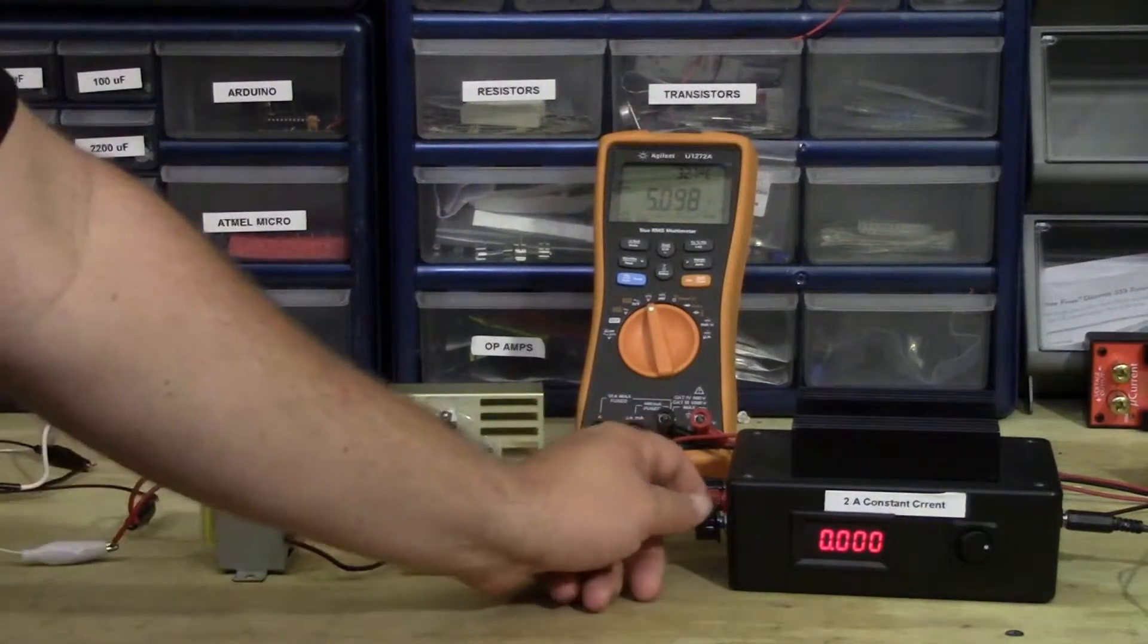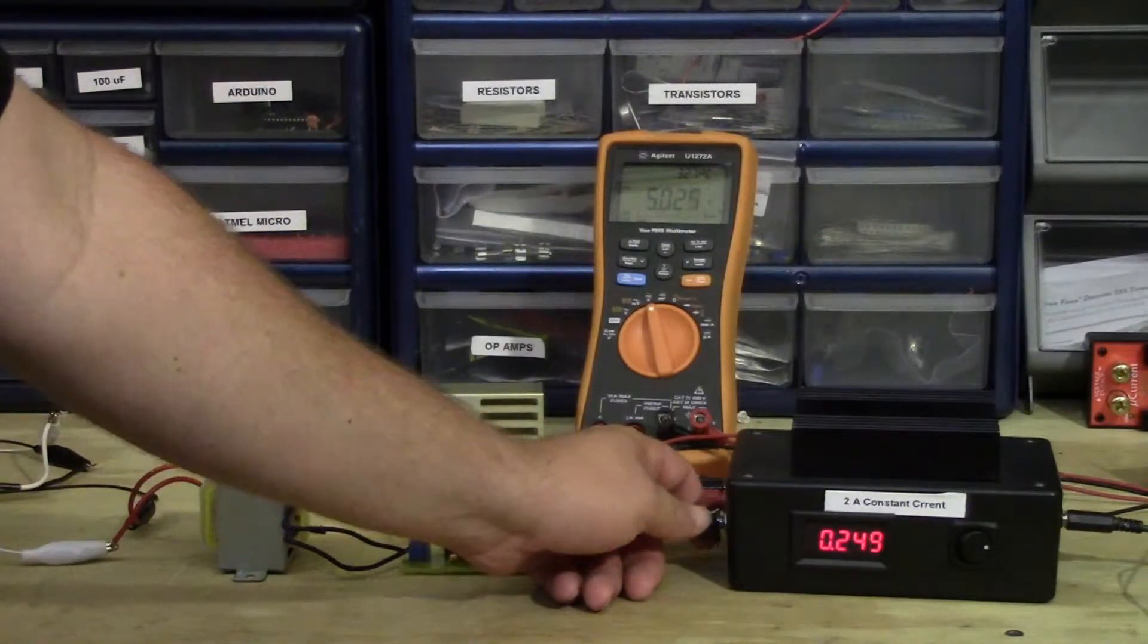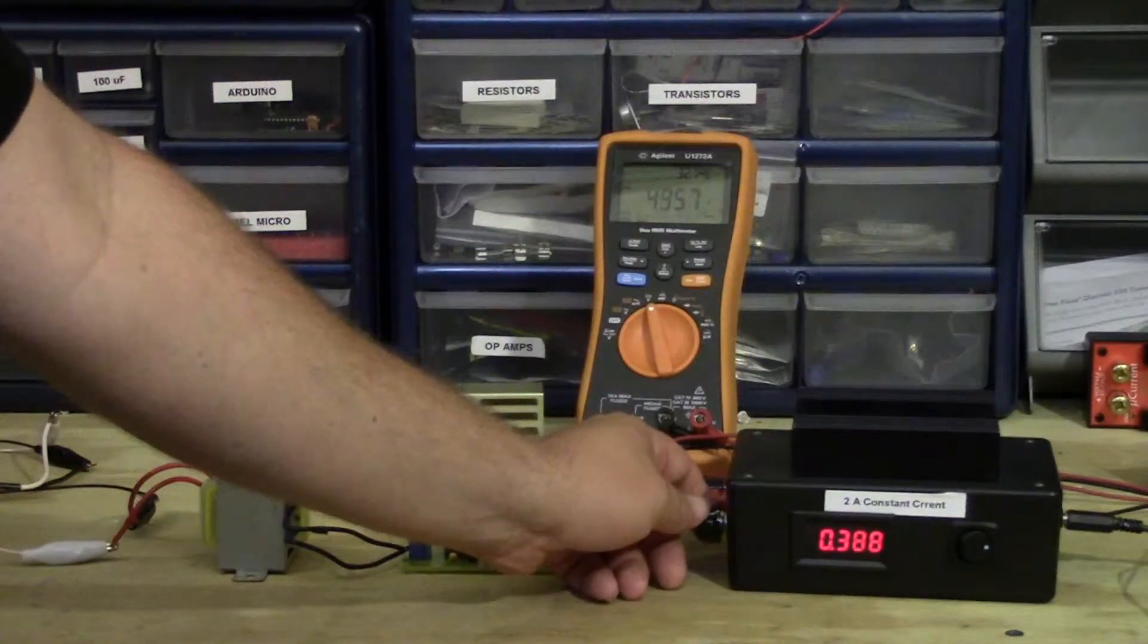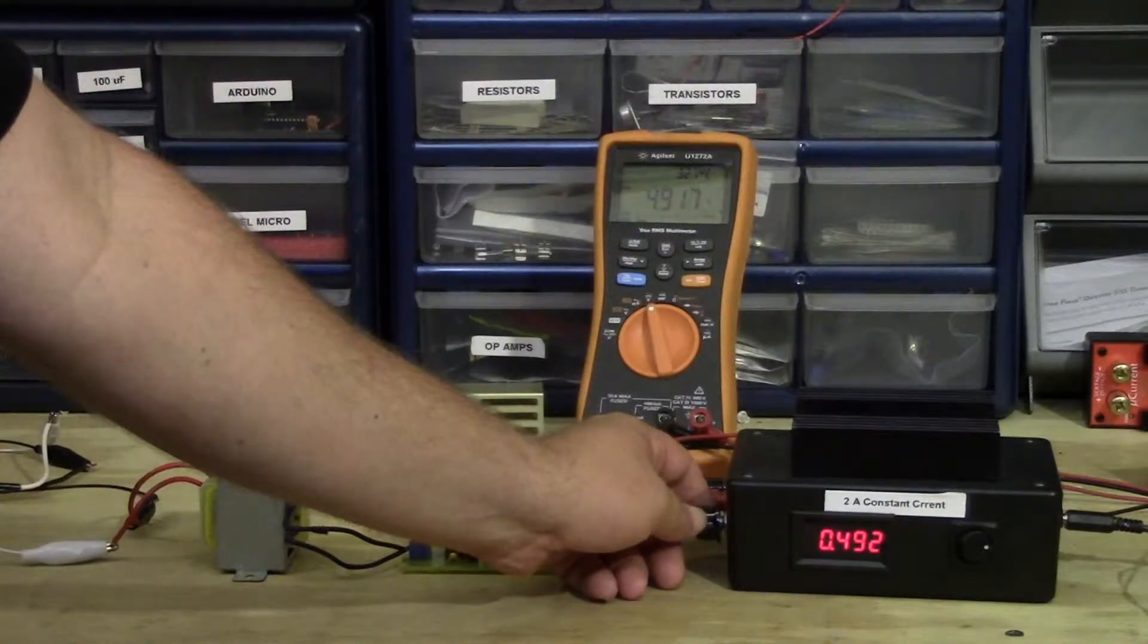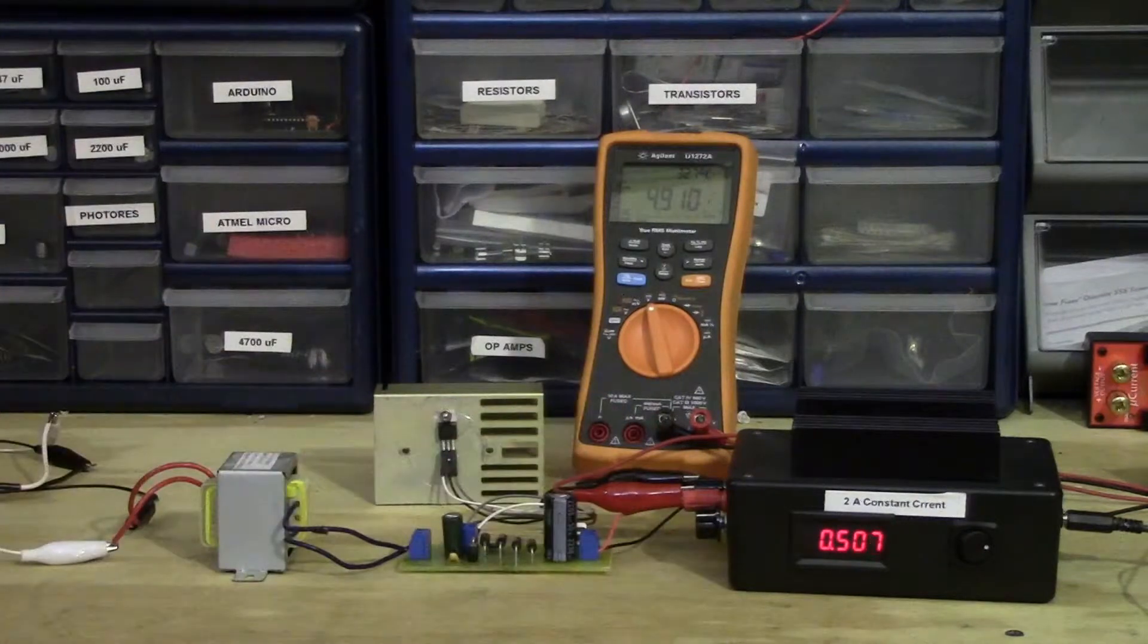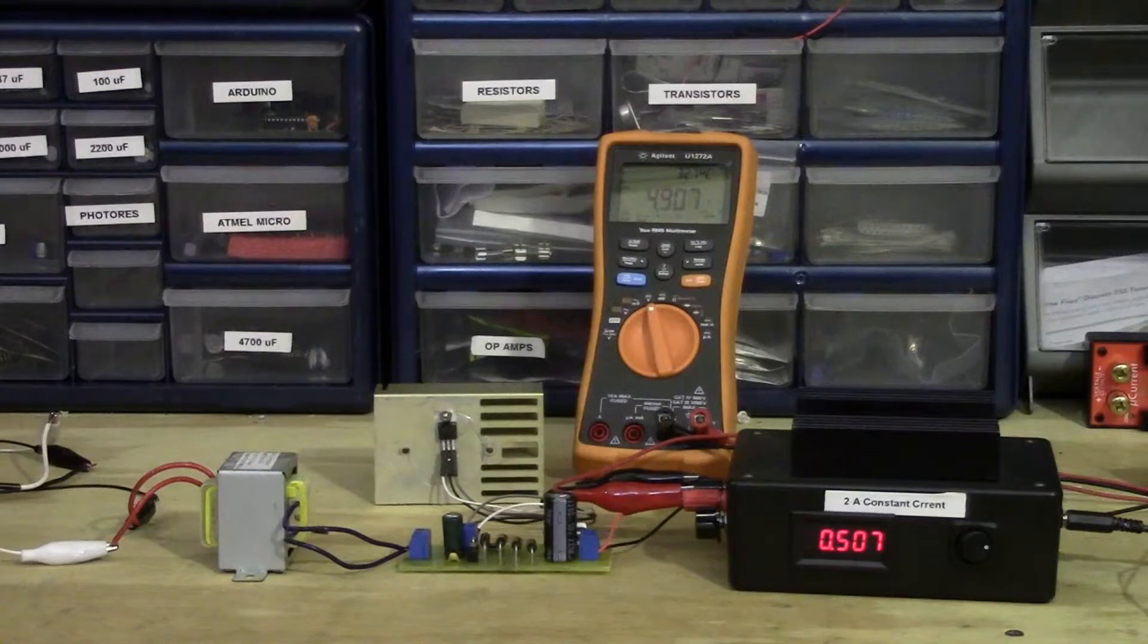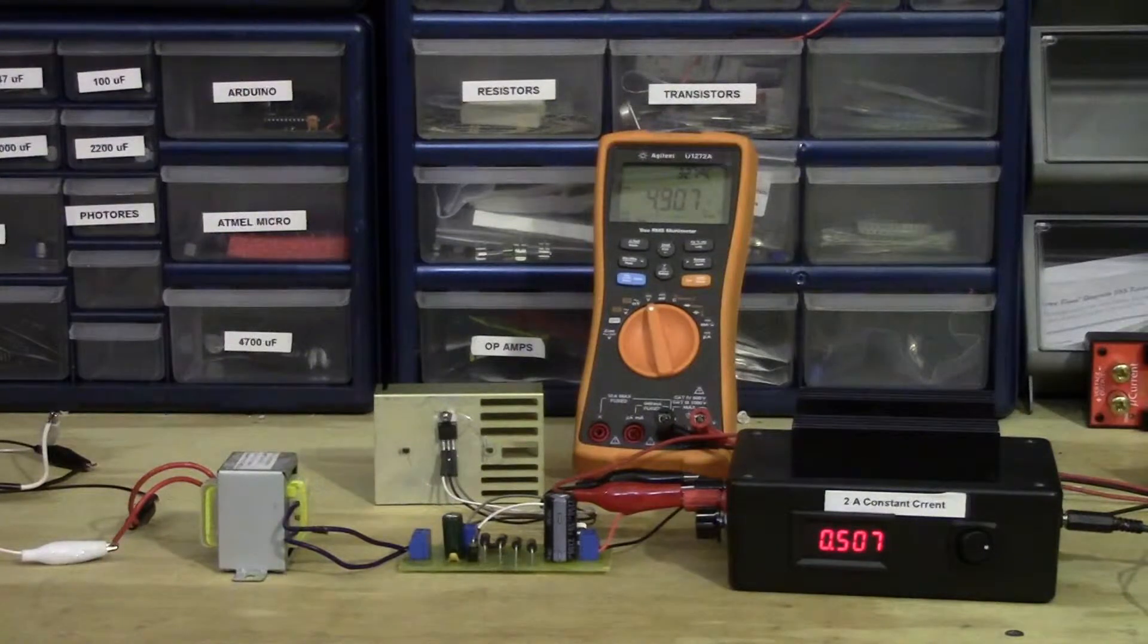So the next thing I want to do is add half an amp. The reason I'm using half an amp is I plan to use this board at a maximum of half an amp. So I want to put a realistic load on the device. I'm at 507 milliamps, and you see we have a little bit of a voltage drop, 4.907 volts, as I was expecting. So that looks pretty good.